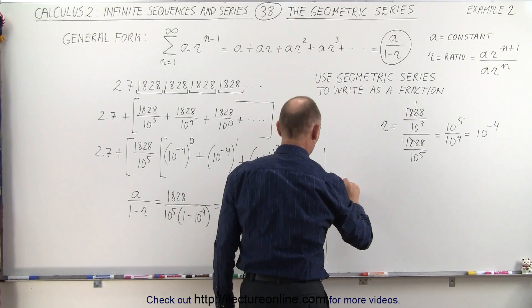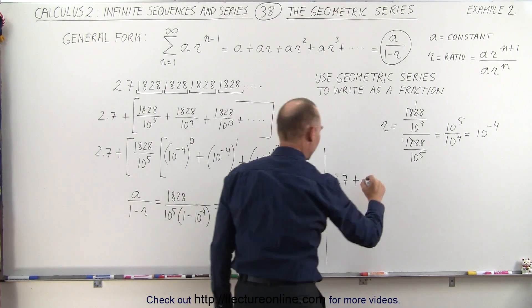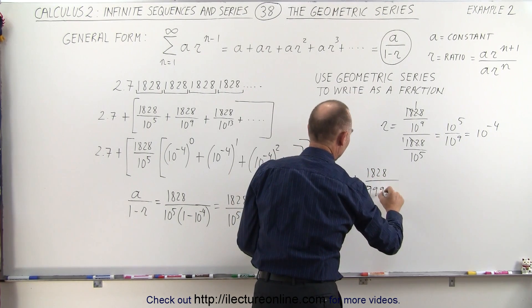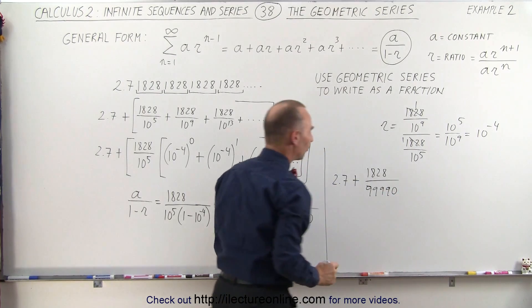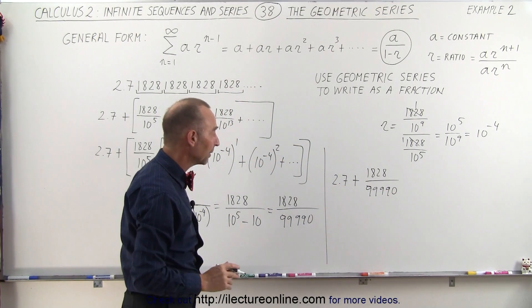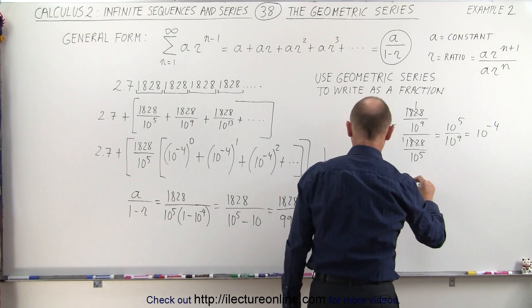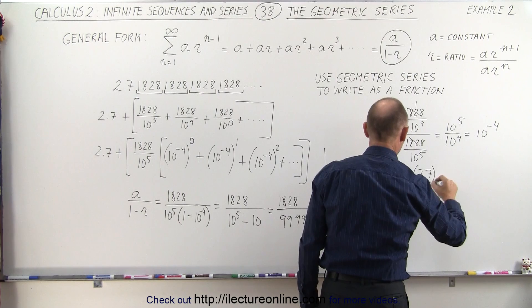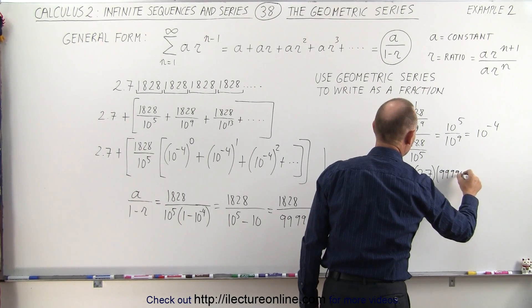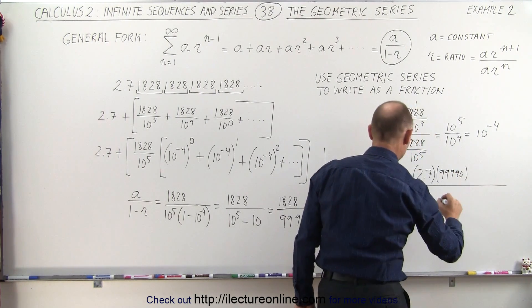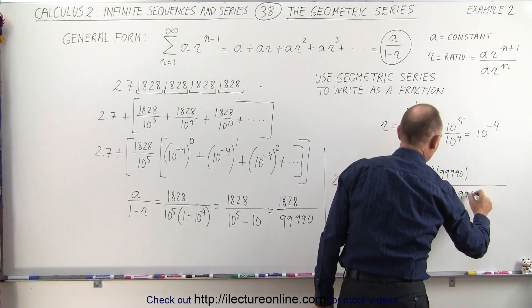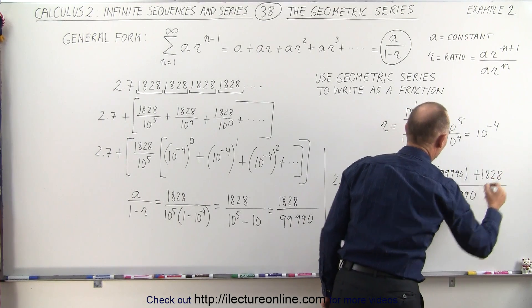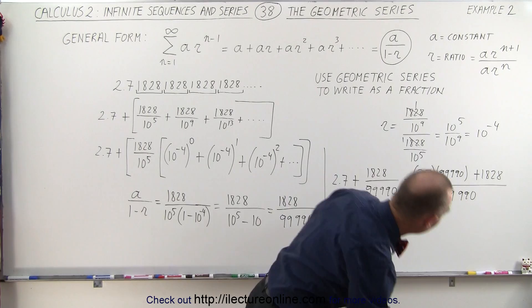So now we get 2.7 plus the fraction of 1828 divided by 99,990, which of course now we have to write that over a common denominator. So this can be written as 2.7 times 99,990 divided by 99,990, which is now the common denominator. We have to add 1828 to that. And I think at this point I'm going to grab my calculator.